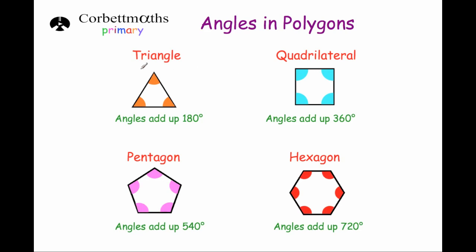Here we've got a triangle. The angles in a triangle add up to 180 degrees, and that's all triangles whether it's right-angled, equilateral, scalene, or isosceles. The angles in those triangles will add up to 180 degrees.